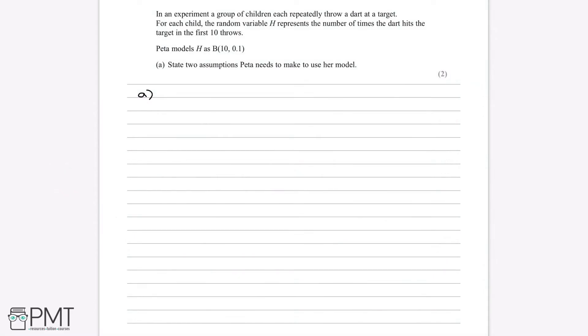In an experiment, a group of children each repeatedly throw a dart at a target. For each child, the random variable H represents the number of times the dart hits the target in the first 10 throws.